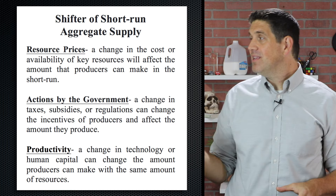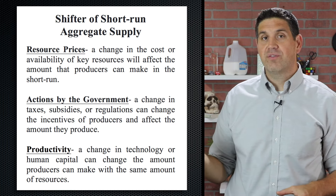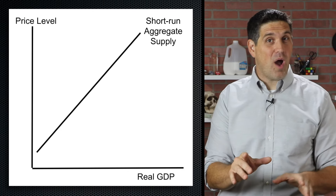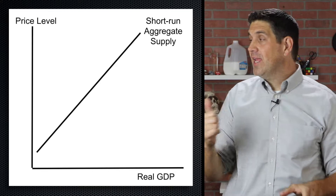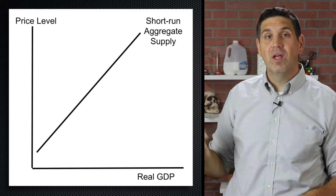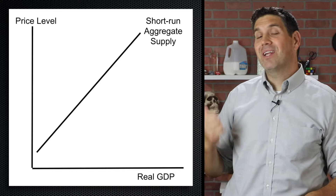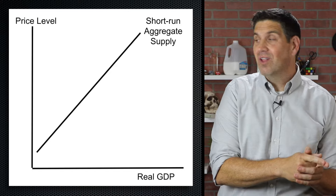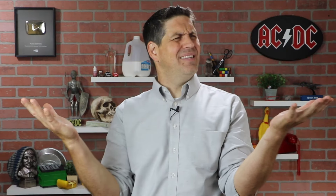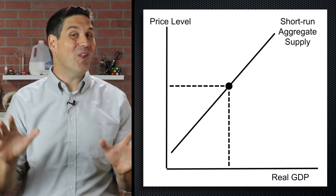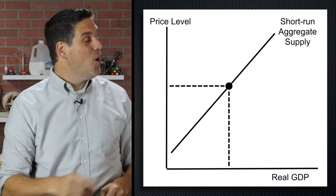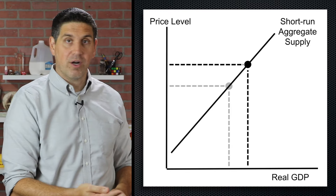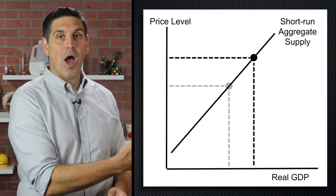The shifters of supply are pretty simple and intuitive, so you probably feel pretty comfortable with this. But there's something to watch out for: a change in price level doesn't shift the supply, but a change in expected price level does shift the supply. When price level goes up, we move along the short run aggregate supply curve and produce more output.